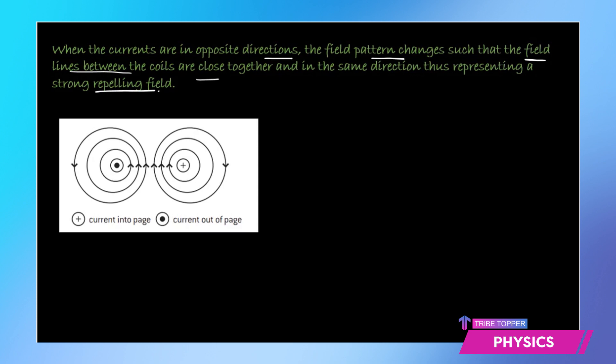As you can see here, in one case the field lines are anti-clockwise and in the other case the field lines are clockwise and they indicate a repulsion. That's why two parallel wires carrying current in opposite directions suffer repulsion.